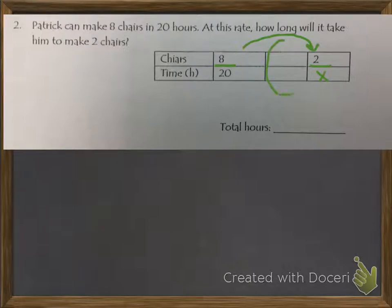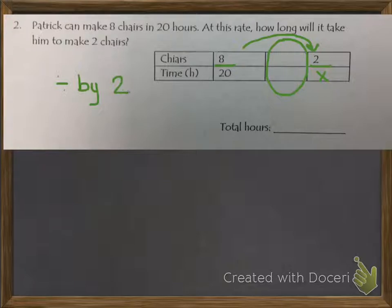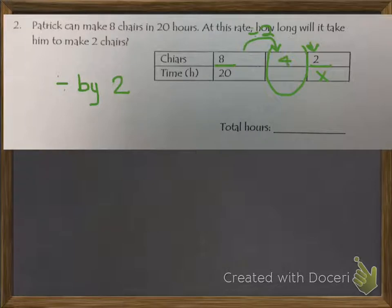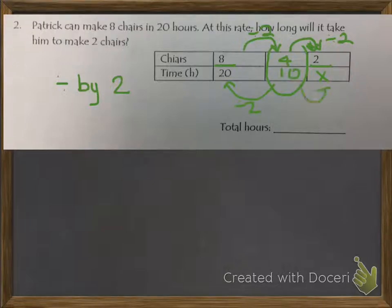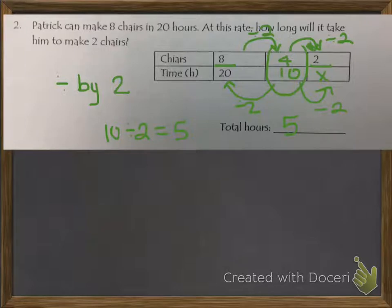We do have a middle fraction, so we're not going to go directly to 2. What lives in between 8 and 2 — what can we divide by? We can divide by 2. Going from 8 to the missing value, if we divide by 2, we get 4. And if we divide 4 by 2, do we get 2? Yes. So we do the same thing to the hours: 20 divided by 2 equals 10, and then 10 divided by 2 equals 5. That means we need a total of 5 hours to make 2 chairs.